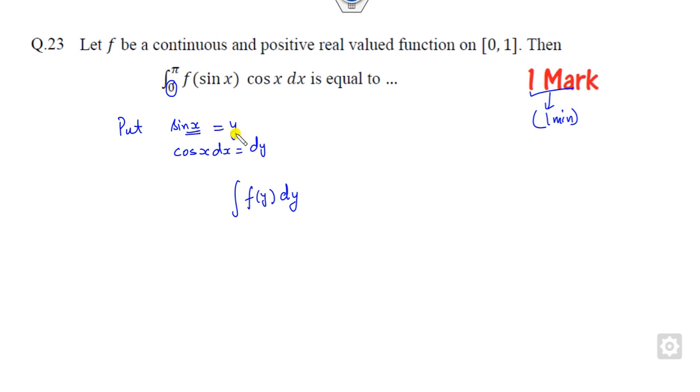When x is 0, the value of y is 0. When x is π, the value of y is again 0. What is the answer when there is a 0 to 0 limit? It will always be 0. So the right answer is 0. You can see that within one plus one minute, you can solve both questions in a very simple manner.